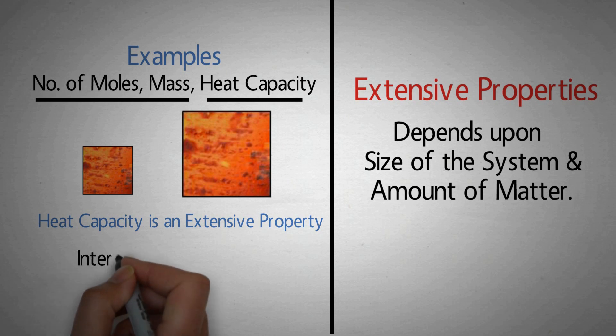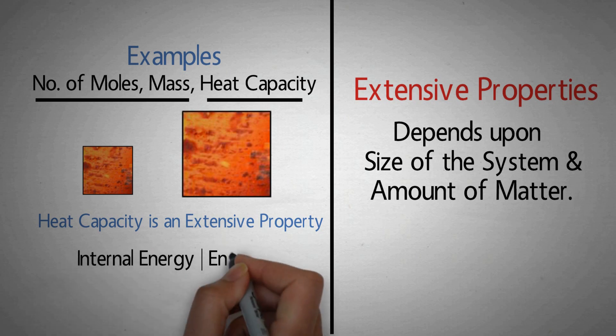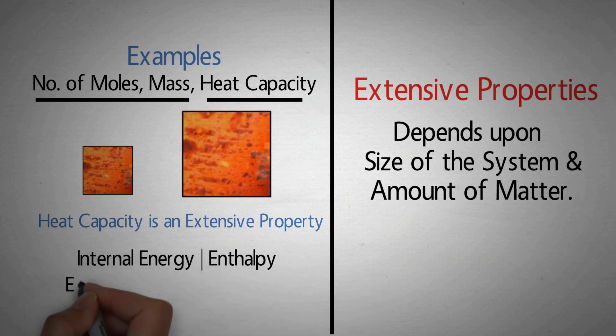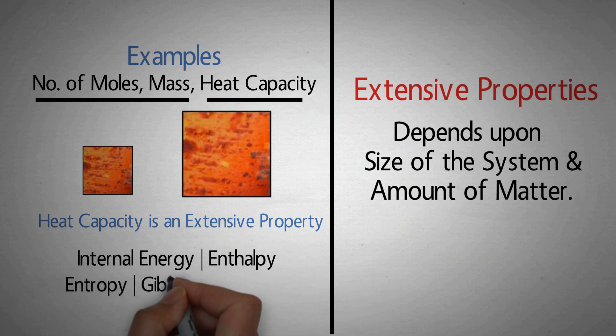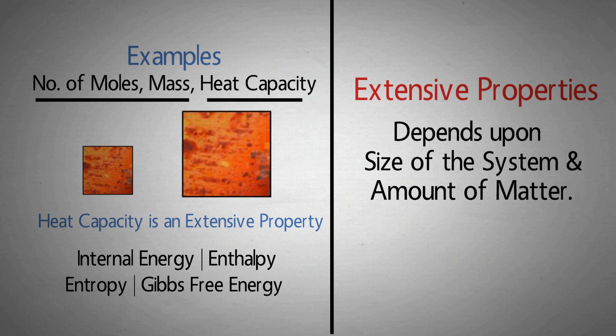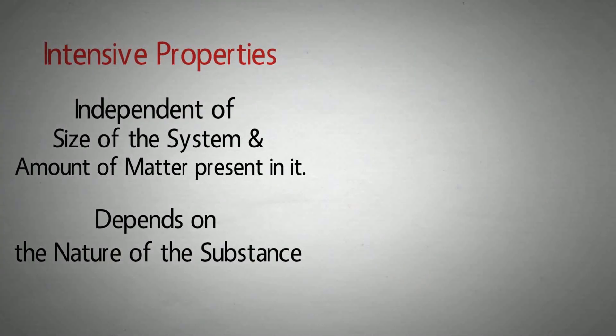कुछ और extensive properties के examples हैं: internal energy, enthalpy, entropy, and Gibbs free energy. यह properties क्या होती हैं, यह समझने के बाद ही हम बता सकते हैं कि यह extensive properties क्यों हैं। इन properties के बारे में हम आने वाले tutorials में detail में discuss करेंगे।